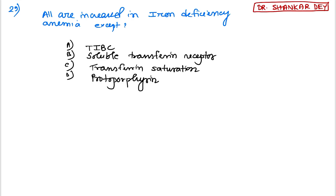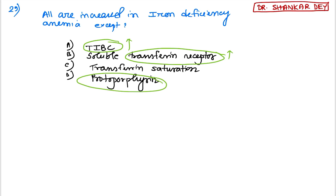Question 29: all are increased in iron deficiency anemia except — TIBC increases in iron deficiency anemia, transferrin receptor increases, protoporphyrin increases. The answer (the exception) is transferrin saturation, which decreases in iron deficiency anemia.